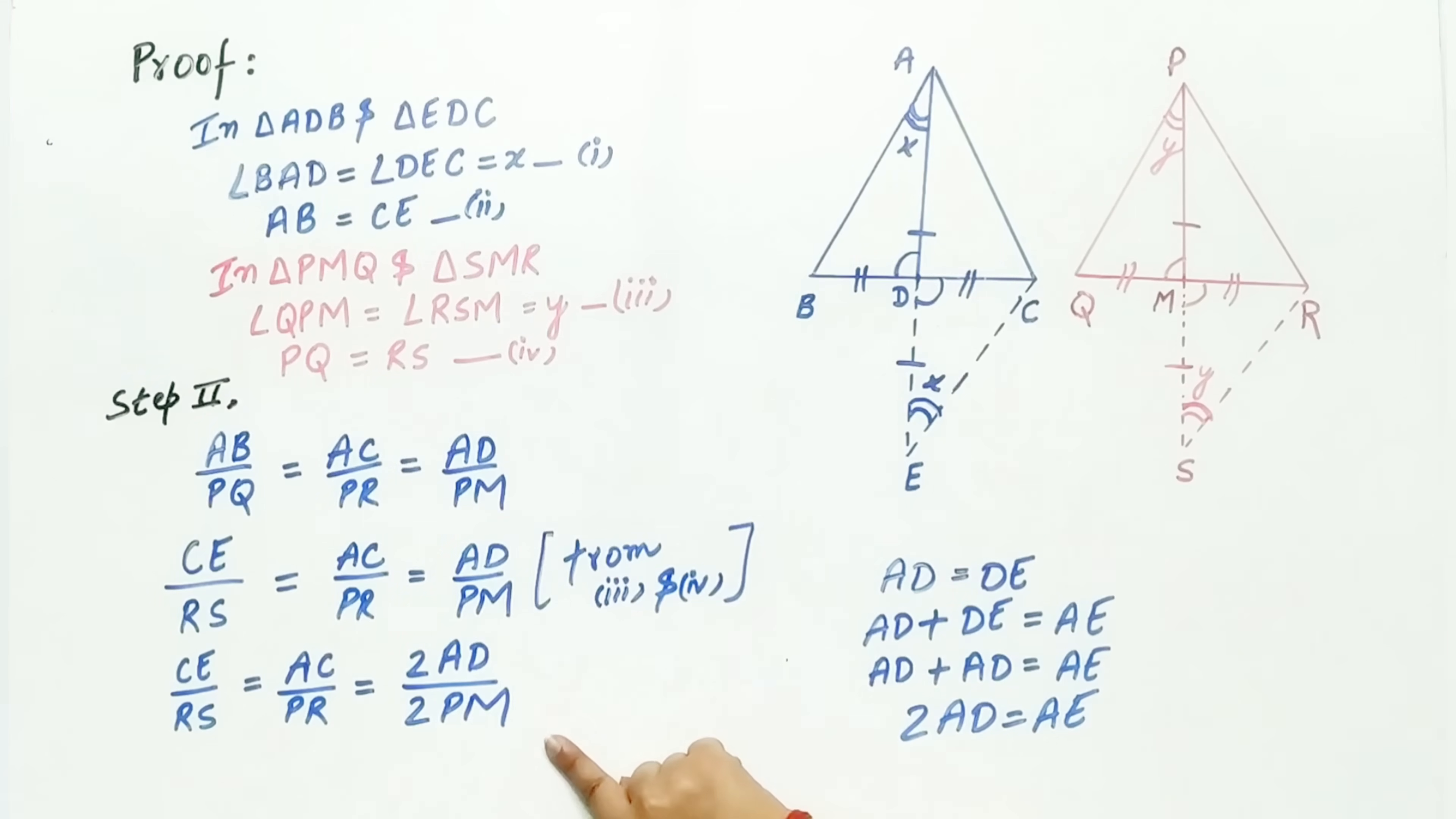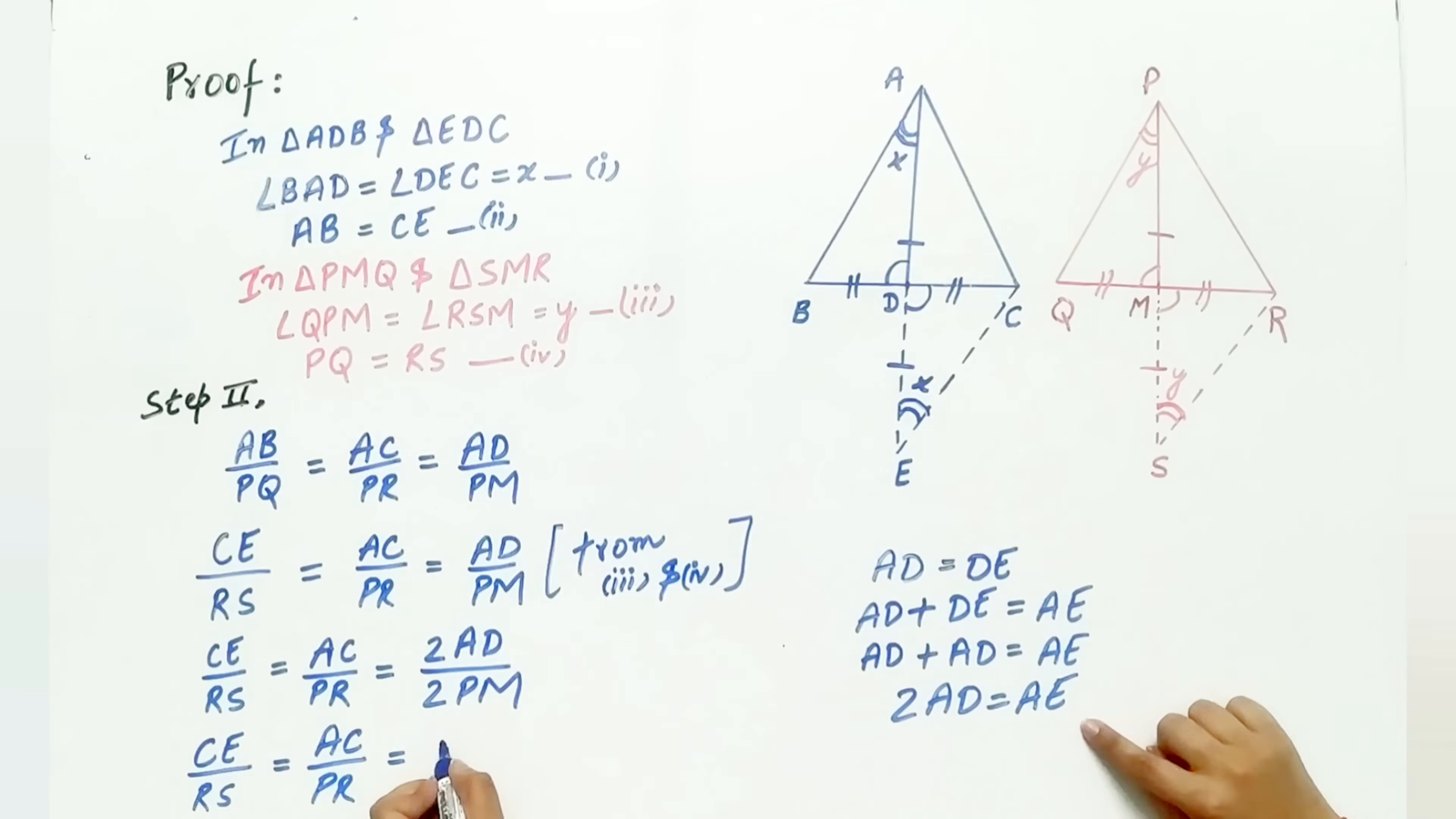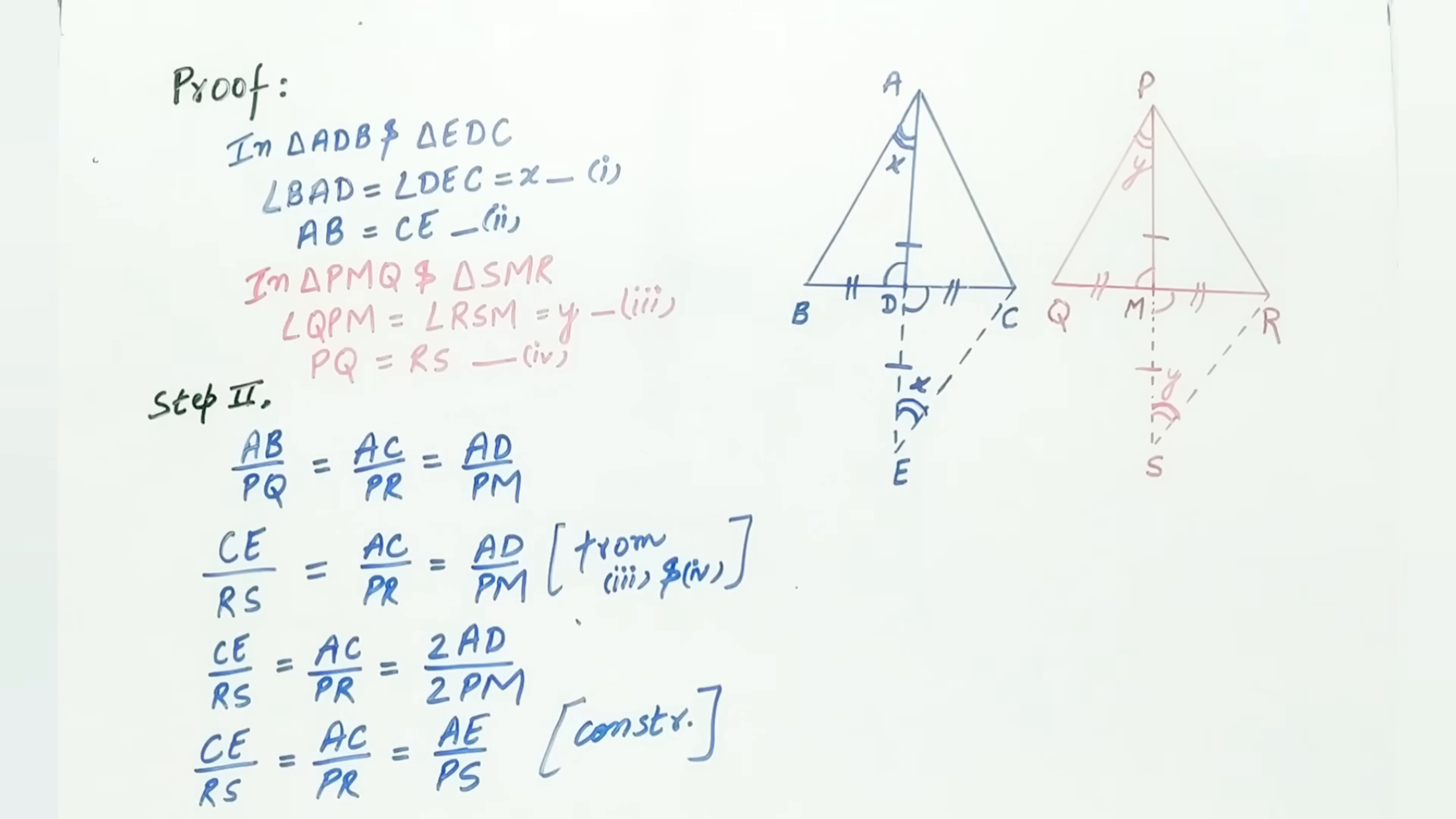twice of PM will be equal to PS. Twice of AD is AE and twice of PM is equal to PS. Now, look carefully.